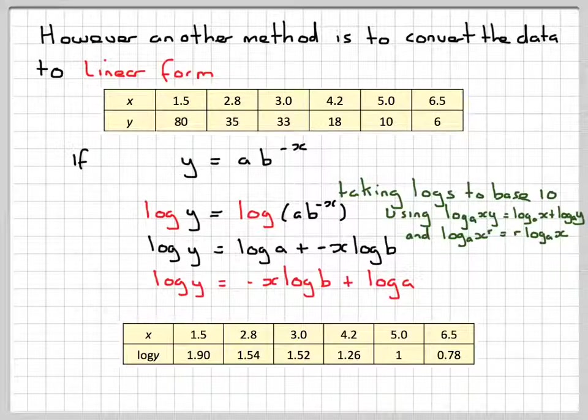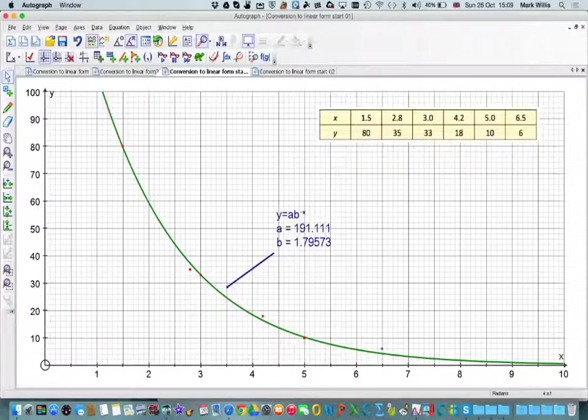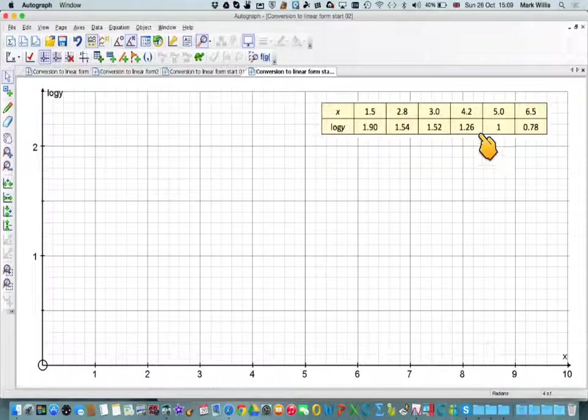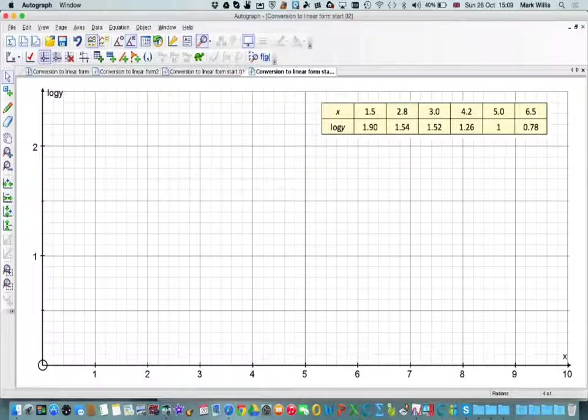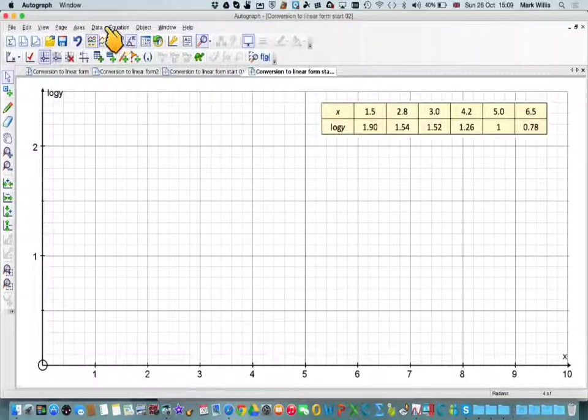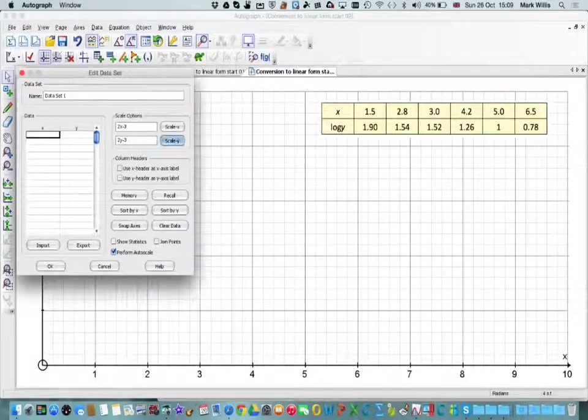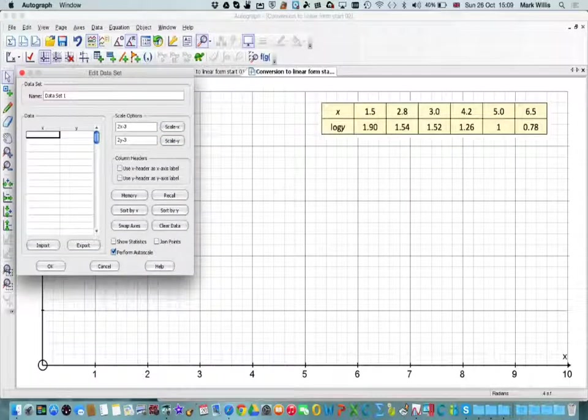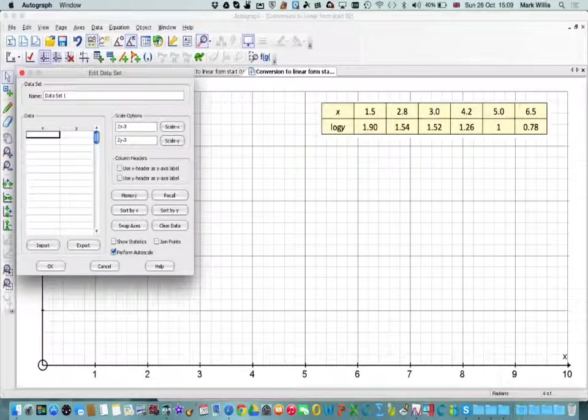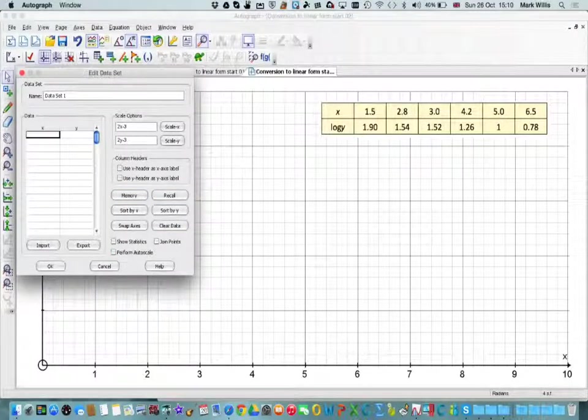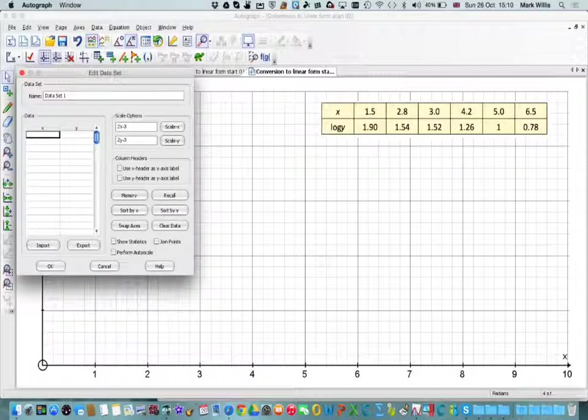Going to my Autograph, I have the graph paper already set up and I have the data already imported. Again, going back to data, enter the data set. If you don't want it to change the autoscale, then take that off. If you're starting with a new Autograph page, it's okay to leave it.